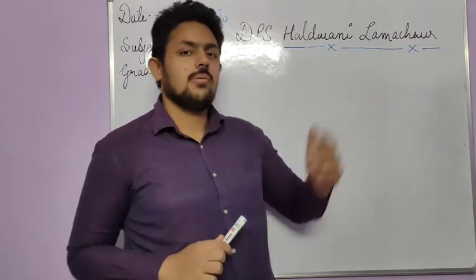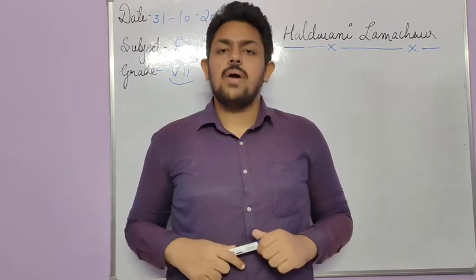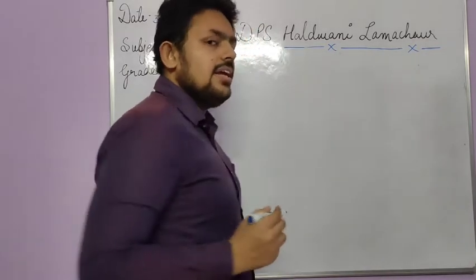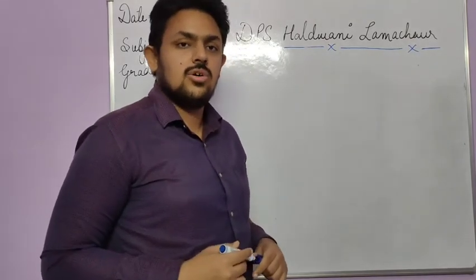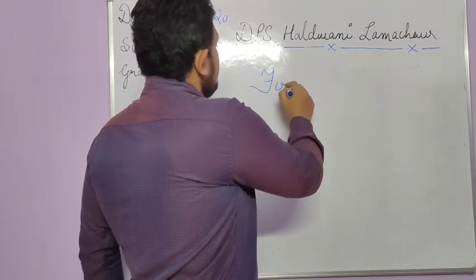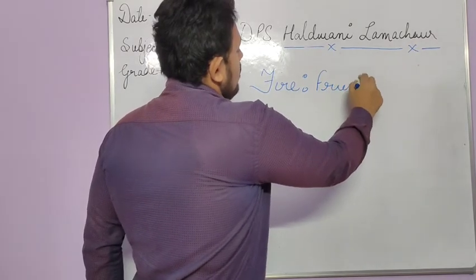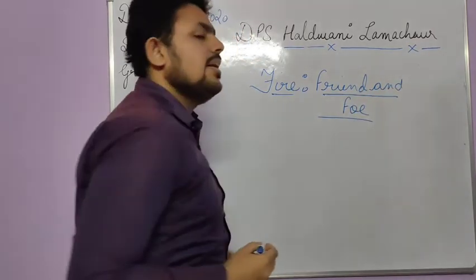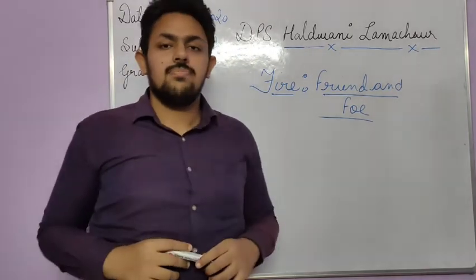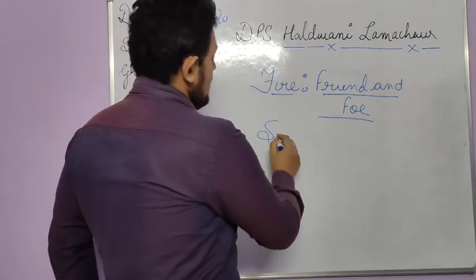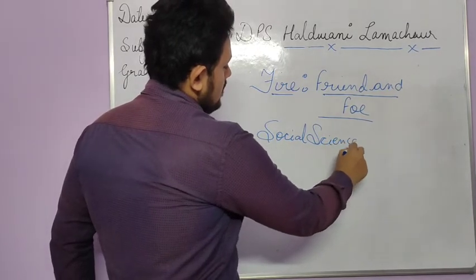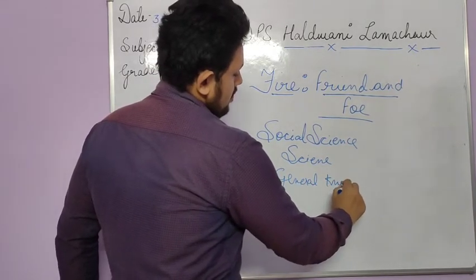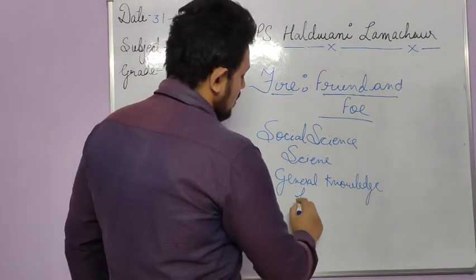Hi, I'm Oman from PPS Albani Lama Chaur and you're watching PTO classes. I'm back with another lesson from Grade 7 and we are learning English today in literature. The chapter we have today is a very interesting one and it is related to your SST also. The name of your chapter is 'Fire Friend and Foe.'